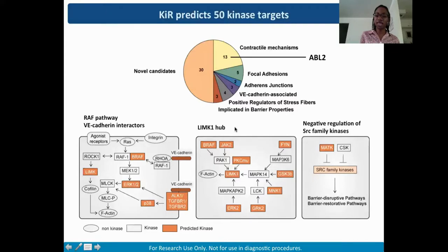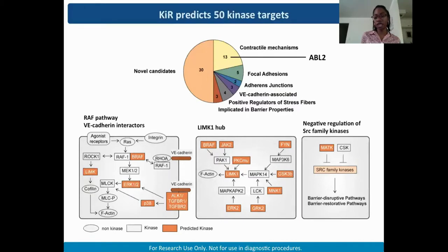The model also predicted CSK and MATK as two negative regulators of Src family kinases. Src family kinases play diverse roles including in endothelial barrier regulation, mediating both barrier-restorative and barrier-disruptive pathways. From a small screen of 28 kinase inhibitors, we are probing vast signaling networks, and the kinase regression tool helps us make sense of barrier regulation.